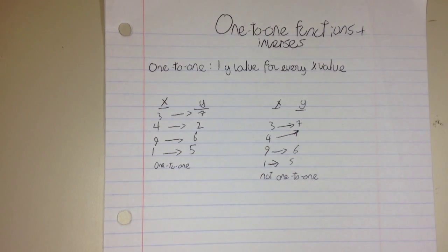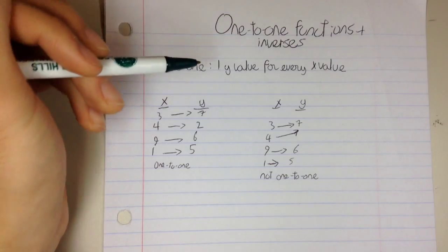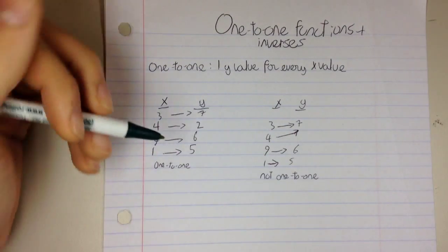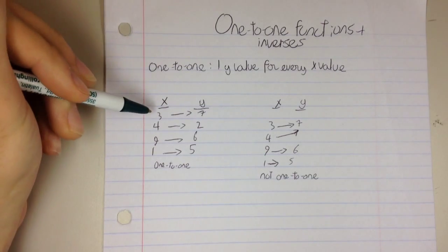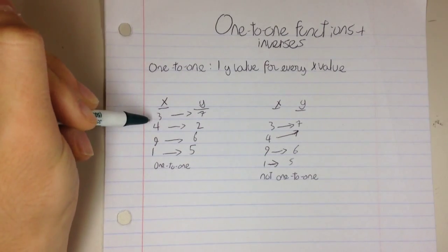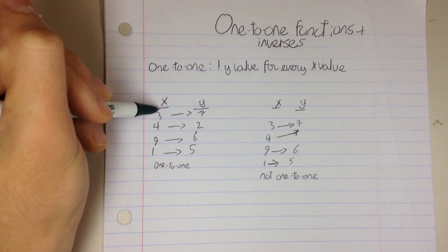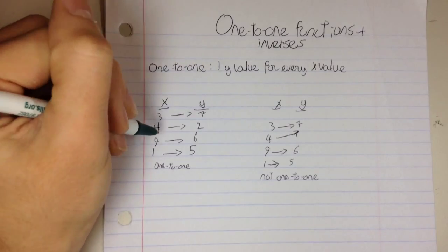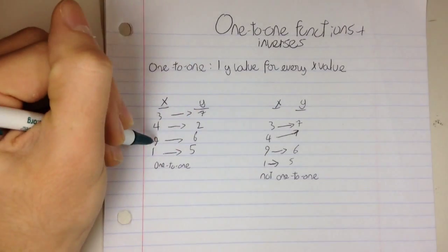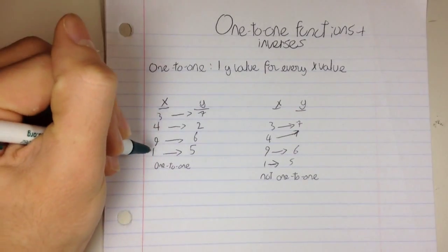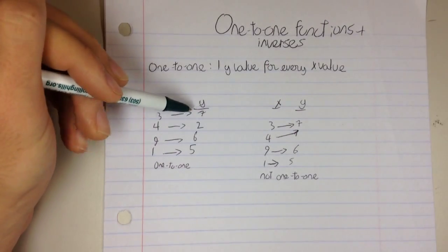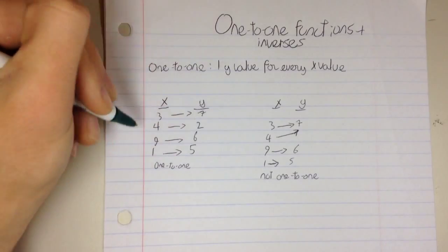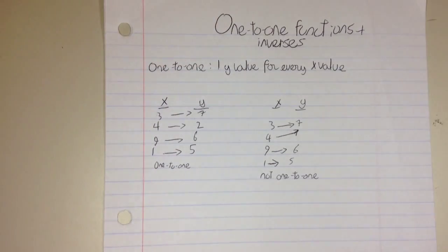A one-to-one function is pretty straightforward — there is one y value for every x value. For example, let's say we had a random function where we plug in 3 and get 7, plug in 4 and get 2, plug in 9 and get 6, plug in 1 and get 5. There is one y value for every x value, so this would be a one-to-one function.